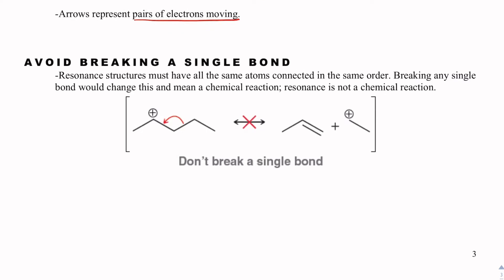There are some rules about resonance arrows. They seem very strange at first, but with effort and persistence you'll get them down. Resonance structures must have all the same atoms connected in the same order. We're not going to break any single bonds, because that would make it a chemical reaction, and resonance is not a chemical reaction. So rule number one: we're not going to break a single bond.